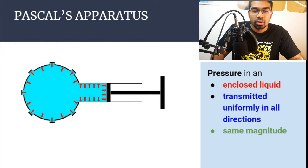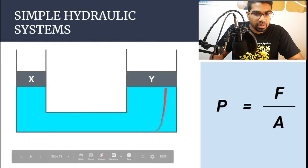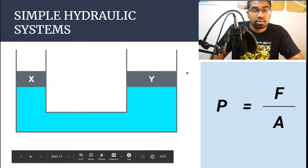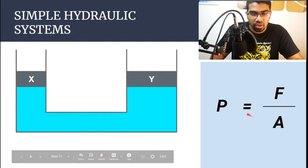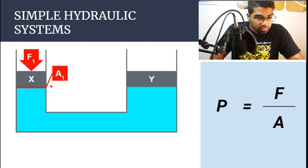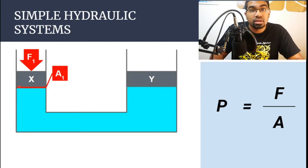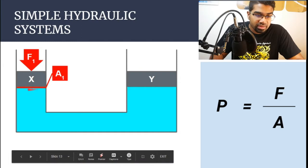Now let's go into detail by looking at simple hydraulic systems. We have pistons X and Y — you can ignore their weight and focus on the force. Remember, pressure is force per unit area. When we apply a force on piston X over its area at the bottom, because that area is acting on the liquid, a pressure is generated and exerted on the enclosed liquid.